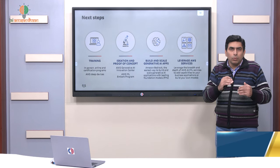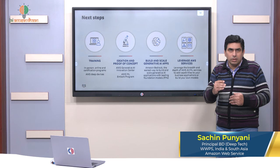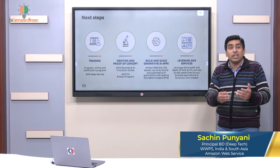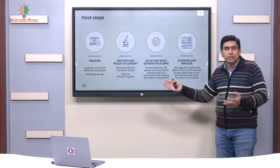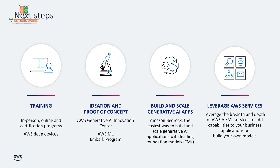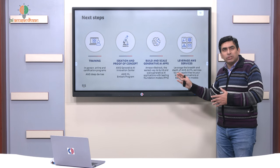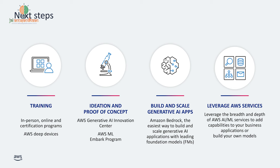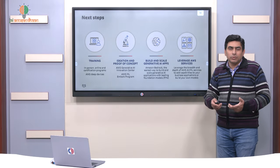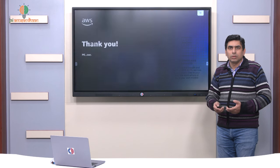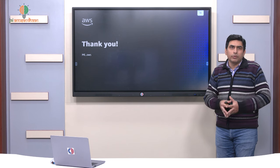So we just saw how the Gen AI stack has evolved and how it is supporting you to build Gen AI-enabled applications. As a next step, if you want to build those kinds of applications, you will need to get some level of training, develop a proof of concept of the solution you want to build, and then once the proof of concept is successful, simply build and scale your generative AI apps using Amazon Bedrock, Amazon Q, and other related services — leveraging AWS services to build your entire solution. Thank you very much.